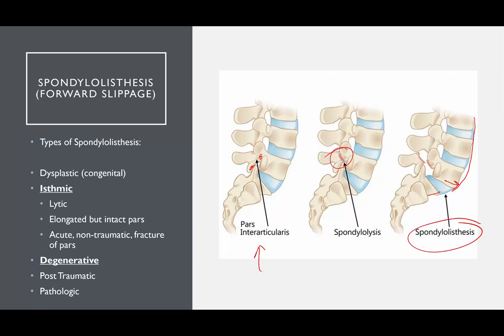There are different types of spondylolisthesis: dysplastic, isthmic, degenerative, post-traumatic, and pathologic. The two main ones to know about are isthmic and degenerative. Isthmic has a couple of subtypes, and then there's degenerative. We've already shown a couple of examples — lumbar degenerative spondylolisthesis, oftentimes in the lower lumbar spine, L4-L5 and L5-S1.